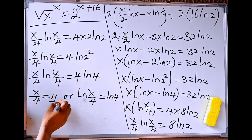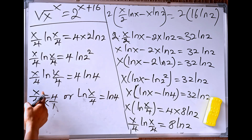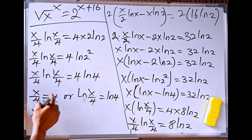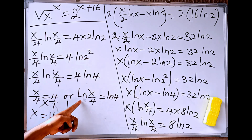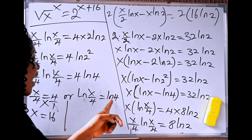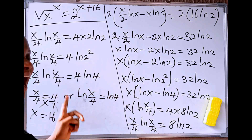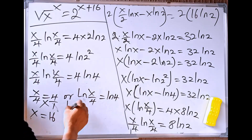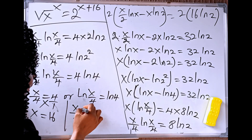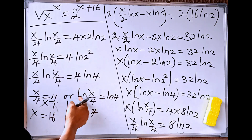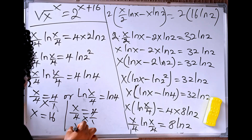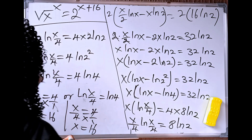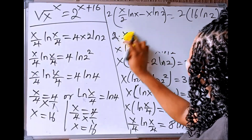For the first case, we cross-multiply — this is over 1 — so x times 1 is x, and 4 times 4 is 16. For the second case, we take the anti-log of ln of x divided by 4 equals ln of 4, which removes the logarithm and gives us x divided by 4 equals 4. Cross-multiplying again gives x equals 16. So we have our value as 16.